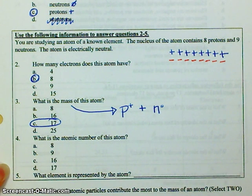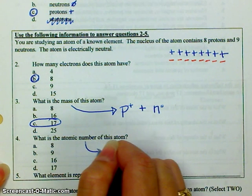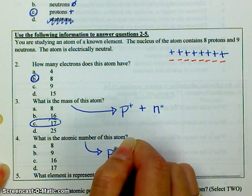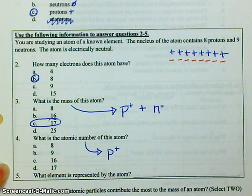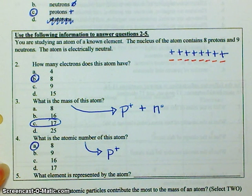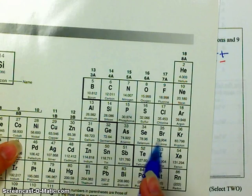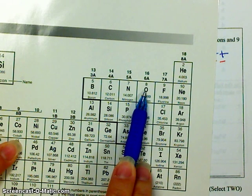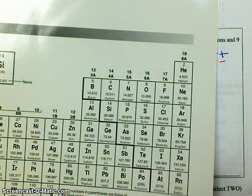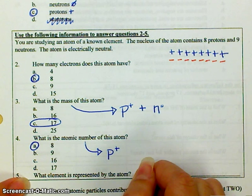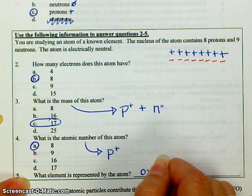What is the atomic number? The atomic number is your number of protons. I look at the question and it says eight protons, so my atomic number is eight. What element is represented by the atom? Let's look at the periodic table and find what has atomic number eight. Oxygen has eight for an atomic number, so this element is oxygen.